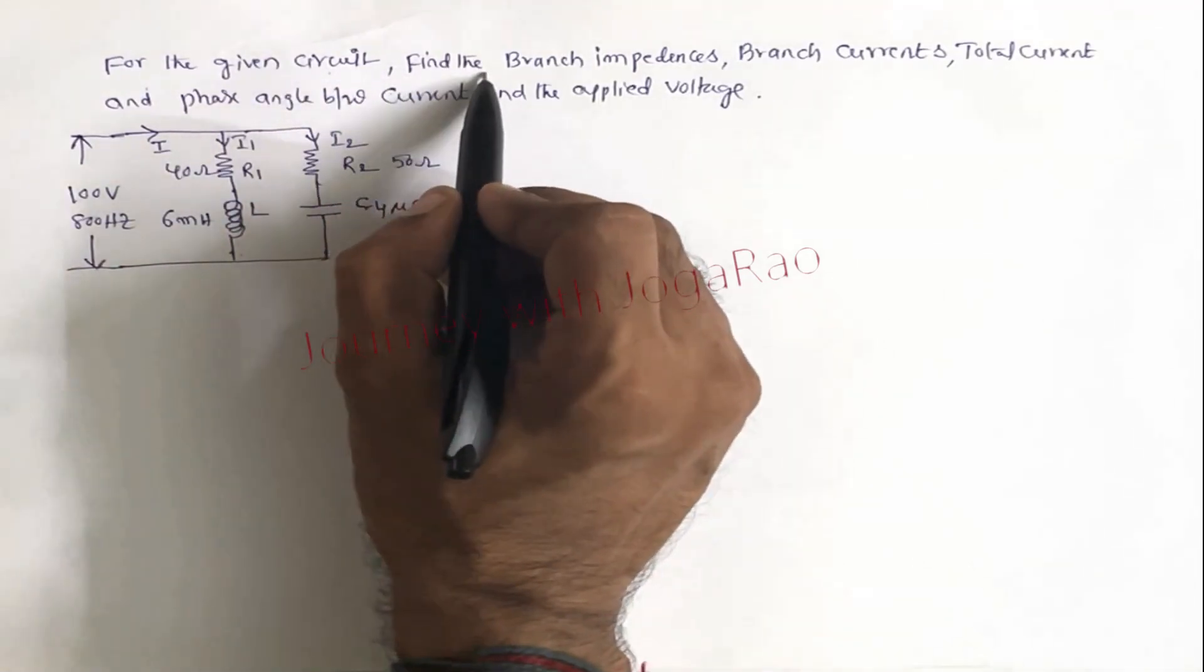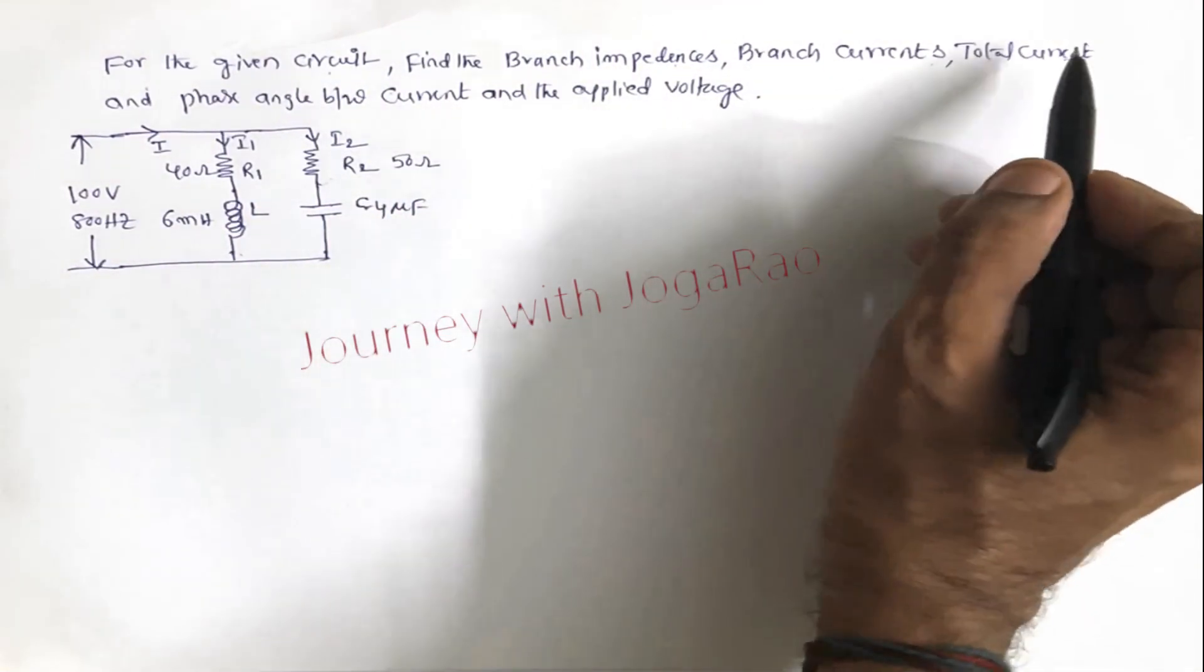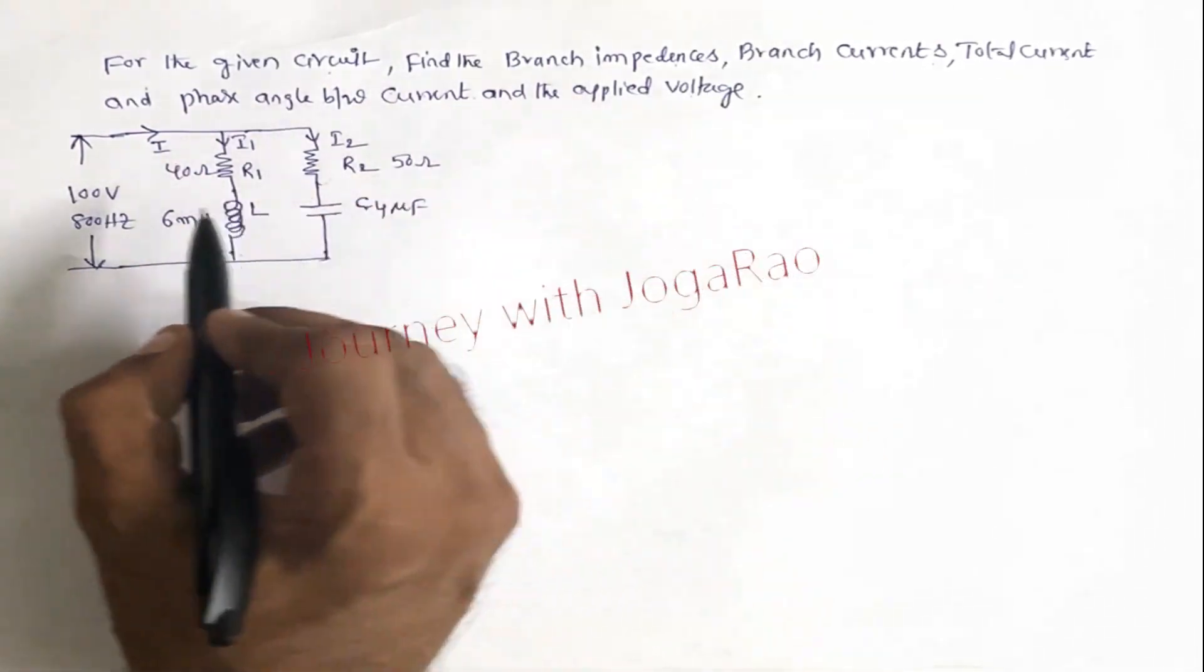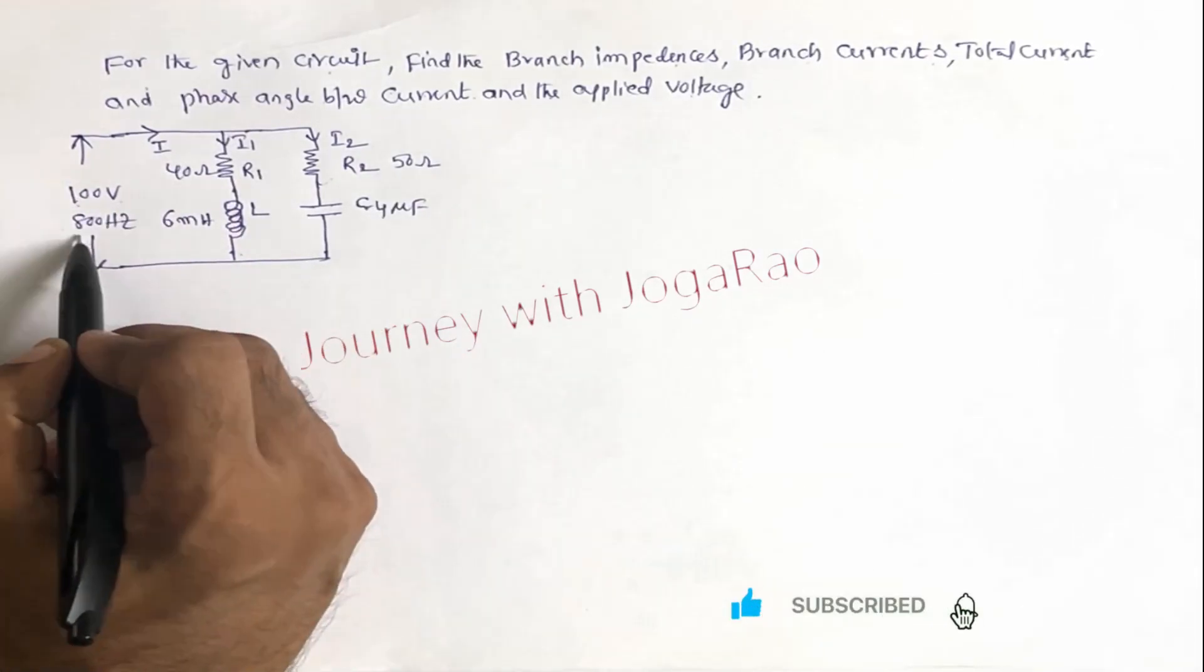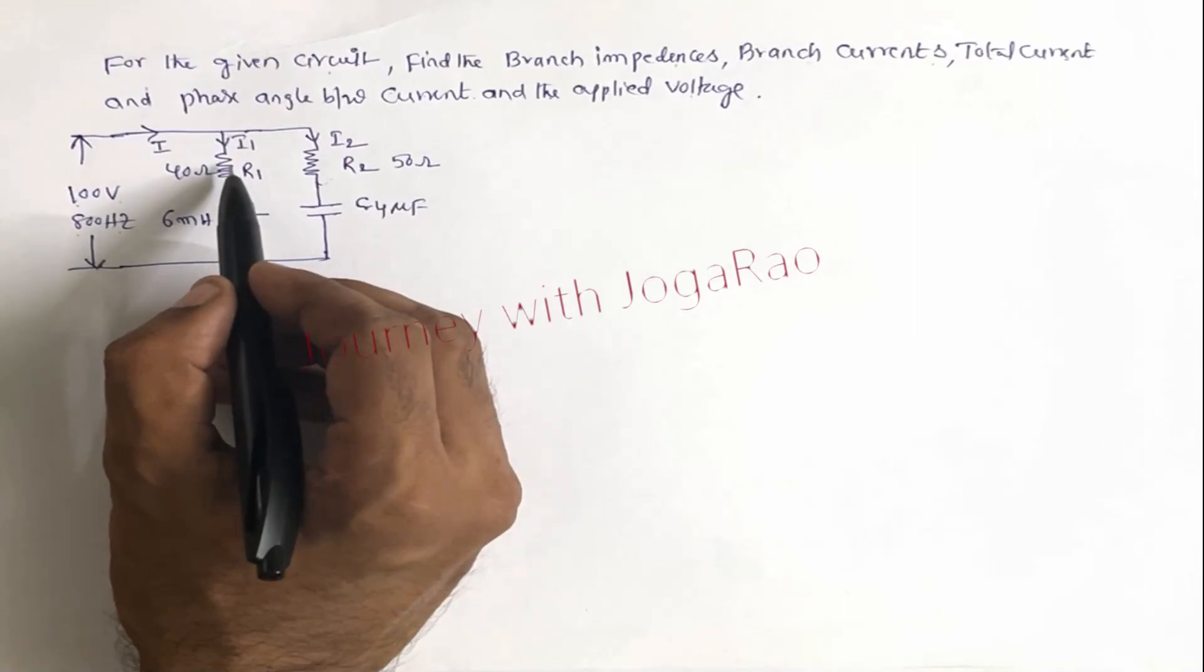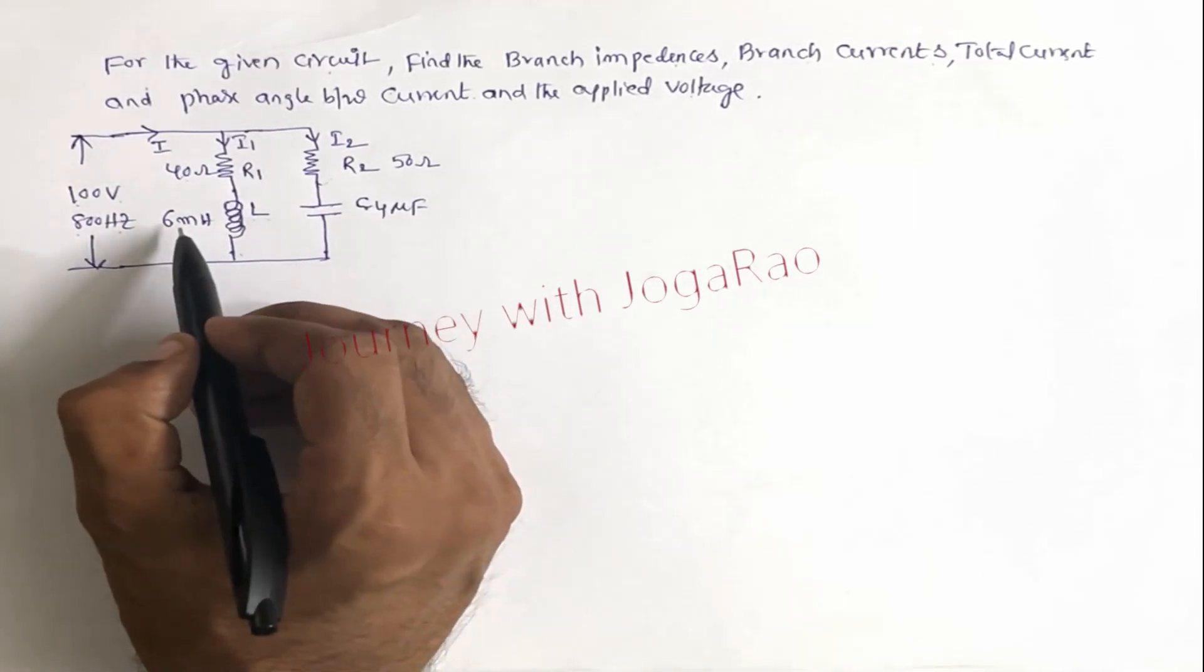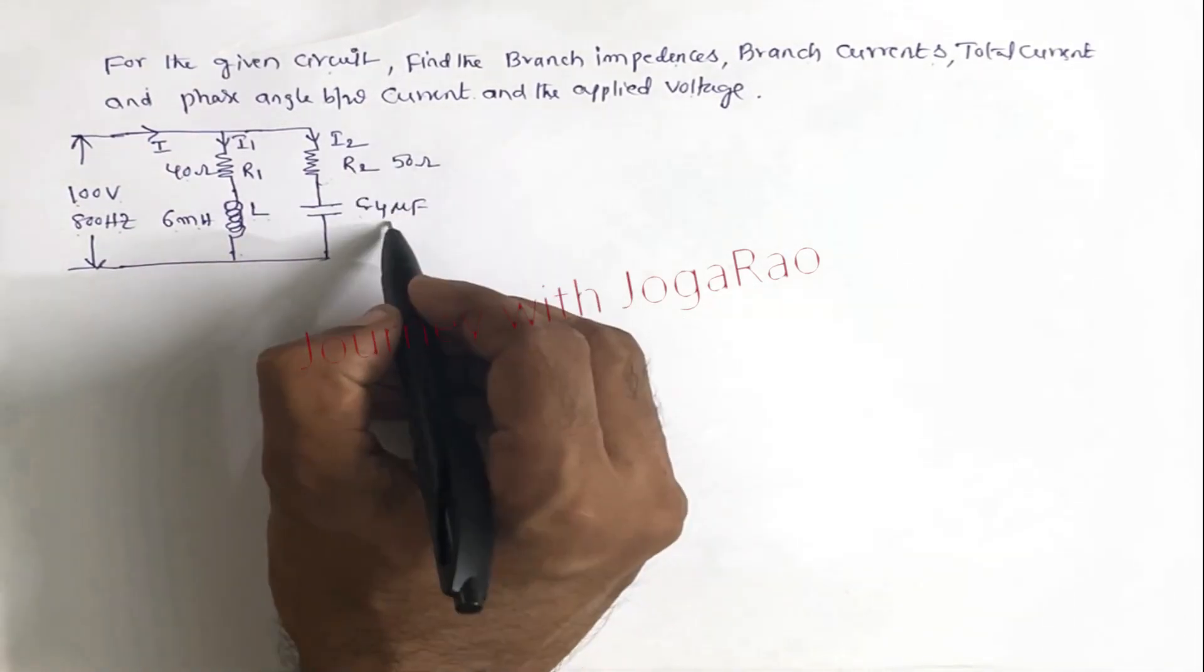For the given circuit, find the branch impedances, branch currents, and total current and phase angle between total current and applied voltage. Here is the circuit. A simple circuit. 100 volts AC supply with 800 frequency. Find the branch impedance.